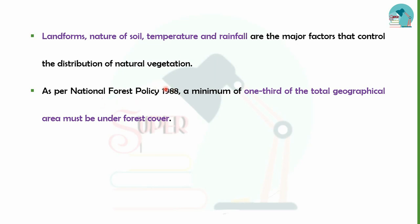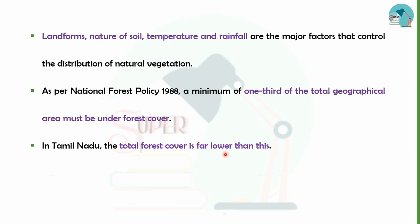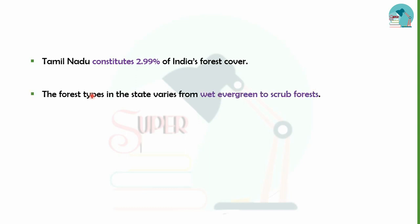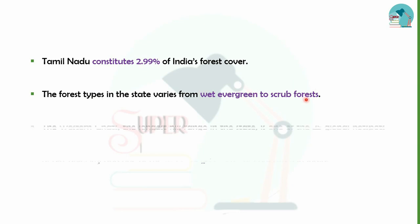What is the national forest policy of 1988? In the first geographical area, one-third of the forest should be covered. In Tamil Nadu, as of 2017, the forest is covered in a state area of 26,281 km², which is 20.21% of the total area. Overall, Tamil Nadu is one of the well-covered states in India. The forest type here covers wet evergreen and scrub forest. In India, the Western Ghats have a long hill range covered as a global hotspot and a megacenter of endemism, with rich biodiversity.